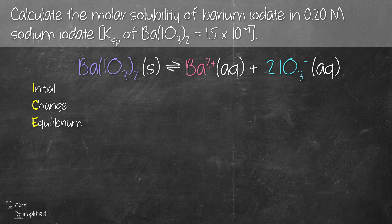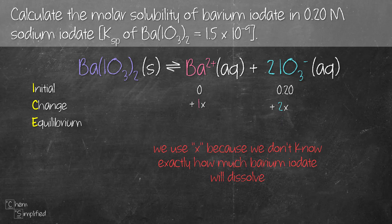Since we can't measure the concentration of a solid — which is our barium iodate — we're going to ignore it in our ICE table and only focus on the concentration of the aqueous portion, which is the barium and iodate ions. For the I (initial concentration), we have 0.20 molar for iodate ion, which comes from the 0.20 molar of sodium iodate. Initially, we don't have any barium ion because initial is before our barium iodate starts to dissolve. For the change in concentration, after barium iodate dissolves, we get 1x for barium ion and 2x for iodate ion.